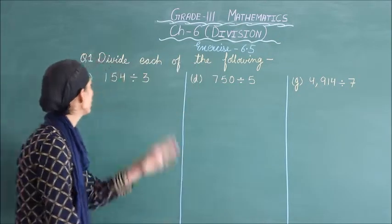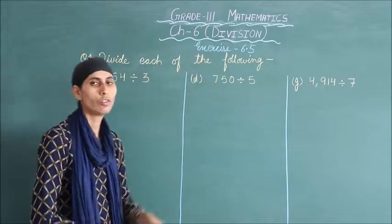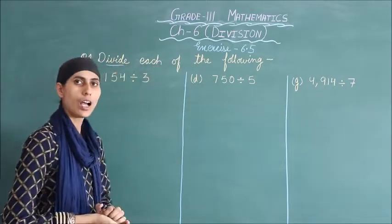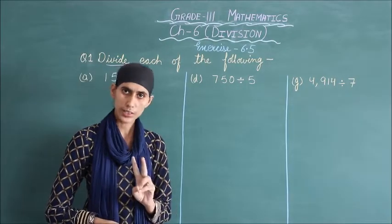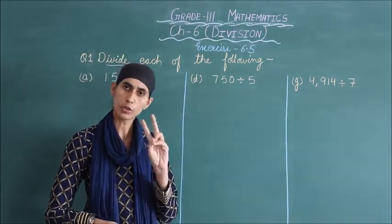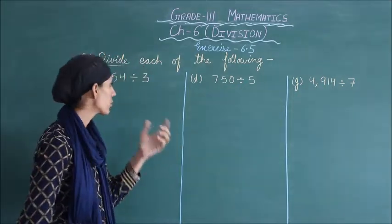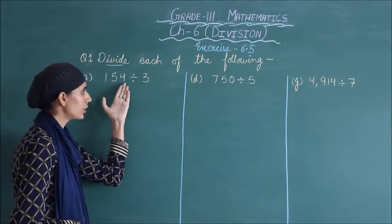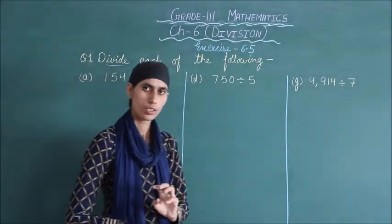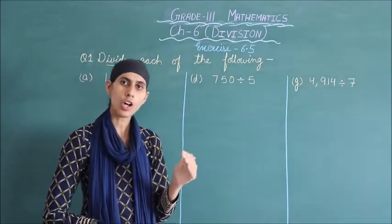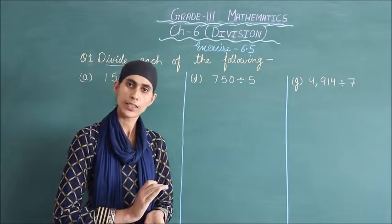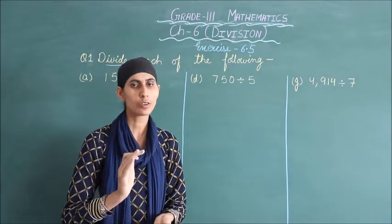Your question is: Divide each of the following. The difference from before is that now we have two-digit numbers divided by two-digit numbers — the dividend was two digits. Now, the dividend has three digits and four digits. So the division is one level higher, but the steps followed are the same.